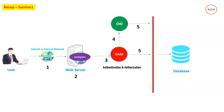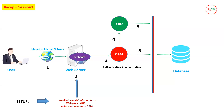This was the basic flow discussed in Session 1. Now when we talk about the setup, the first thing you need is the installation and configuration of WebGate on OHS to forward requests to OAM. Here I'm assuming you have WebLogic with applications running, and an OHS web server already installed. You install OHS first, then install WebGate on top of OHS, because WebGate intercepts requests from the web server and forwards them to OAM.